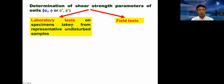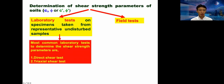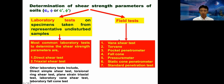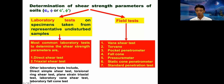To determine the shear strength, laboratory tests can be performed using representative undisturbed samples, or you can perform field tests. The most commonly used tests are the direct shear test, which we did in the last class, and the triaxial shear test, which we're going to discuss today. In the field, a variety of testing methods are used, including the vane shear test, cone penetrometer, pressuremeter, and the standard penetration test (SPT).